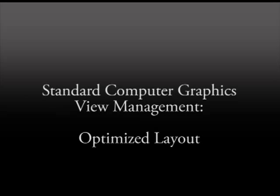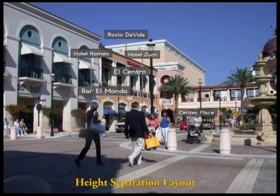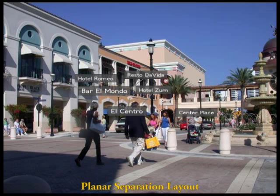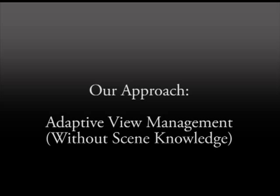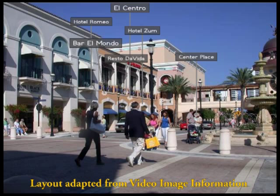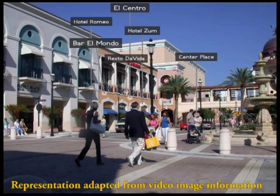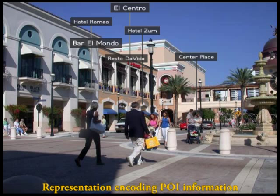Standard view management techniques can resolve visual clutter and ambiguities but fail at resolving occlusions and do not improve the contrast. We present an adaptive image-driven layout algorithm which reduces visual clutter and also resolves occlusions of real-world structures. We automatically adapt the presentation of labels to improve the contrast and encode the distance to the points of interest into the anchor point representations.